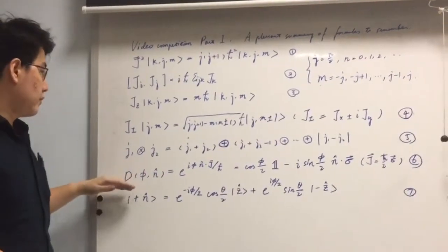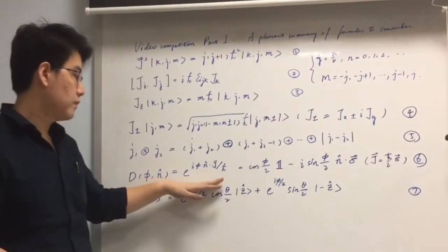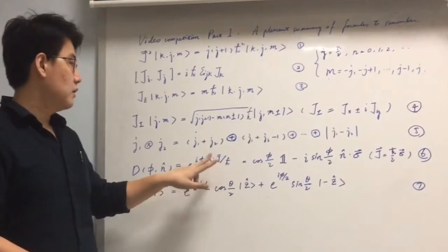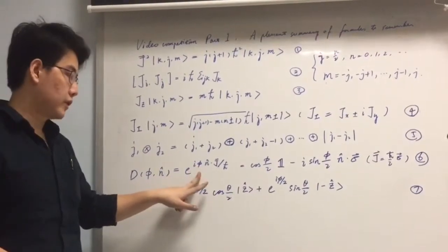In the sixth formula, we can see that the rotation operator takes the following form. It involves the angular momentum operator, the axis along which it rotates, and the angle by which it rotates.